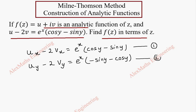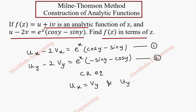Now using the Cauchy-Riemann equations, we have ux = vy and uy = minus vx. We shall replace uy with minus vx and vy with ux in our equations.